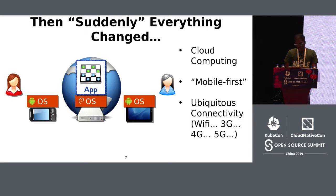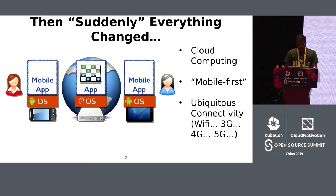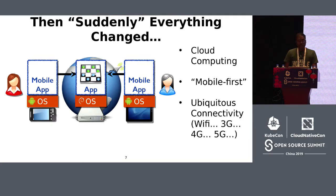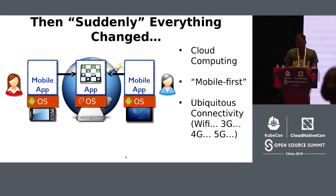These applications need to coordinate across distributed components over links that are sometimes slow or unreliable. Today, even an aquarium at home can have a Raspberry Pi attached to it that controls water level, temperature, feed, and chemicals — all being controlled through software running on the cloud.